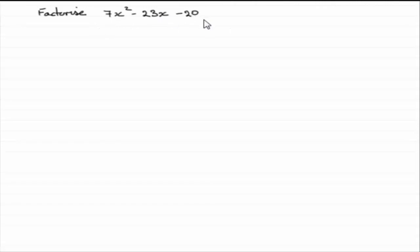Well first of all, always look to see whether you've got a common factor. There is no number that goes into 7, minus 23, and minus 20 exactly, so no common factor.